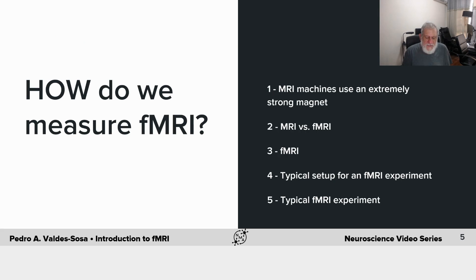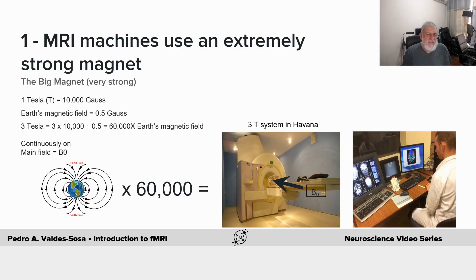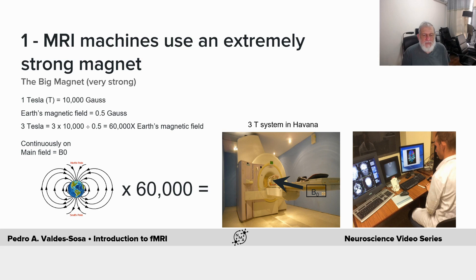fMRI measurements are taken in an MRI machine, which is essentially a huge magnet with other devices like gradients and devices for reading radio frequency pulses. Here we see from the Cuban Neuroscience Center a three Tesla system — this is how we measure the strength of the magnet by Teslas.